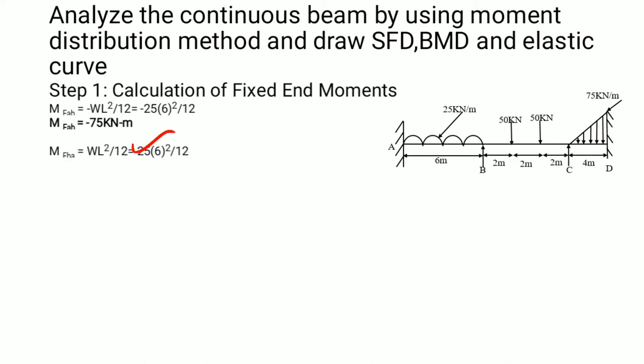Similarly, the fixed end moment MF_BA is the positive variation, given by +wL²/12. Therefore MF_BA = +75 kN·m.